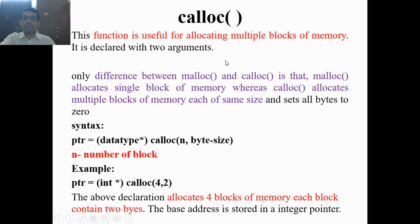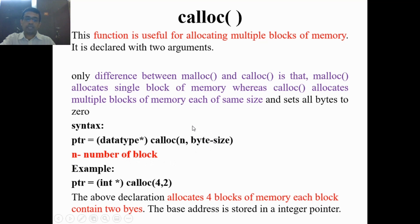Now we will see the syntax. ptr is a pointer variable, data type star is the type conversion, and calloc() is the function name. Within the parentheses we have two parameters: the first parameter is N, and the second parameter is byte_size. N stands for the number of blocks, and byte_size stands for the size in bytes for each block.